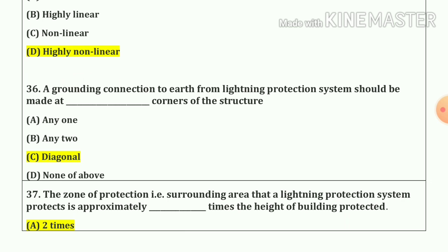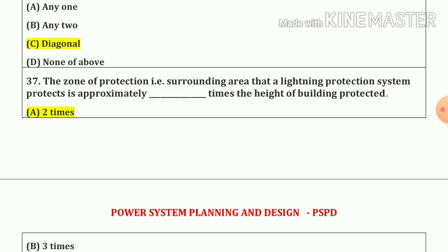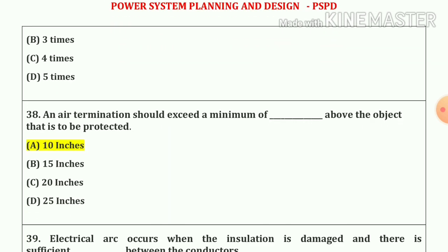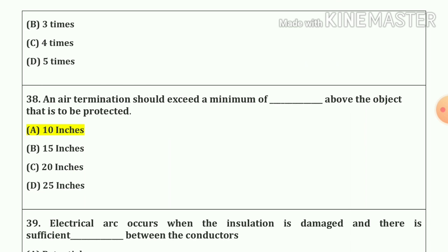Question number 36. A grounding connection to earth from a lightning protection system should be made at diagonal corners of the structure. Question number 37. The zone of protection — the surrounding area that a lightning protection system protects — is approximately 2 times the height of the building protected.